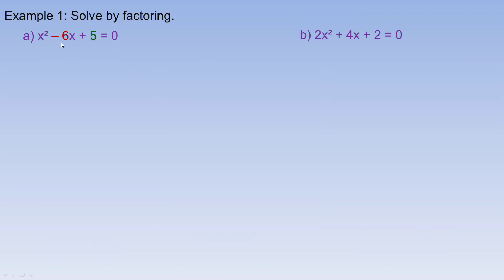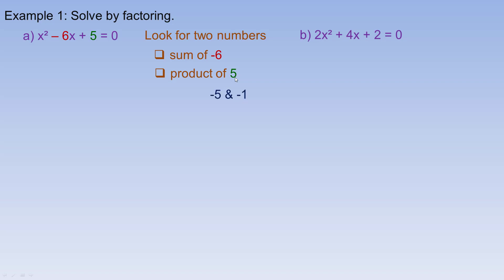Here's the first one: x squared minus 6x plus 5 equals 0. In order to solve this by factoring, this is called a simple trinomial — simple because there are three terms and a 1x squared in the front, as opposed to having some other number there. To factor this, we look for two numbers that have a sum of negative 6 and multiply to 5. There aren't many integers that multiply to 5: there's 5 and 1, and also negative 1 and negative 5. Negative 5 and negative 1 add to negative 6 and multiply to 5, so those are the numbers we want. That gives us (x minus 5)(x minus 1) equals 0 as the factored form.